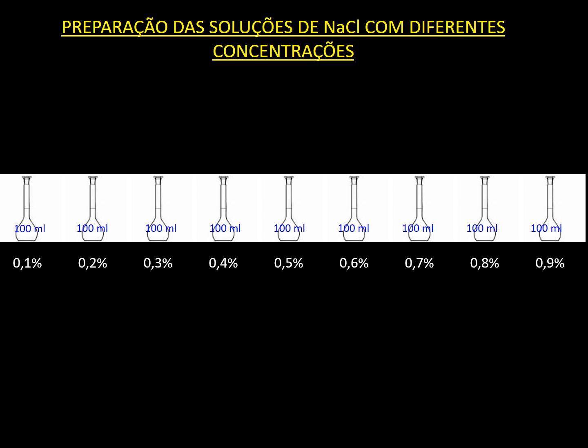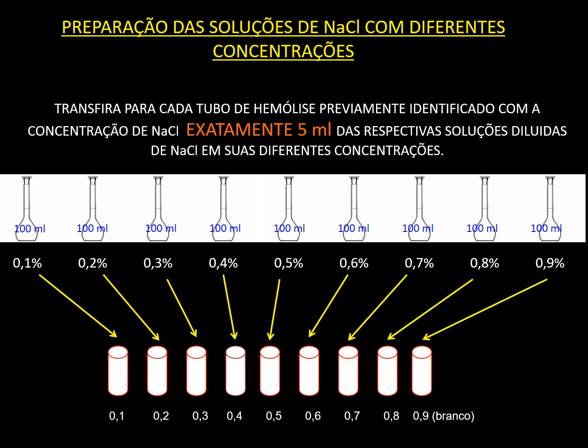Feito isso, assim que chega uma solicitação de teste de fragilidade osmótica, você recolhe os frascos de 01 até 09 de cloreto de sódio, põe no balcão, e na frente deles coloca os tubinhos de hemólise, também identificados. Em cada tubo de hemólise coloca-se 5 ml da solução de cloreto de sódio correspondente à sua concentração específica.